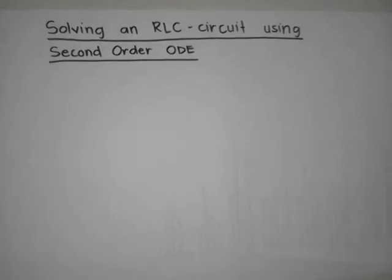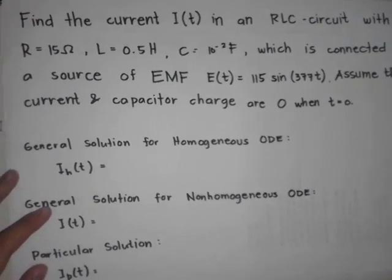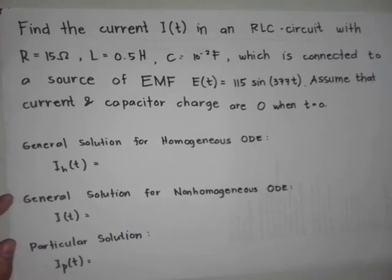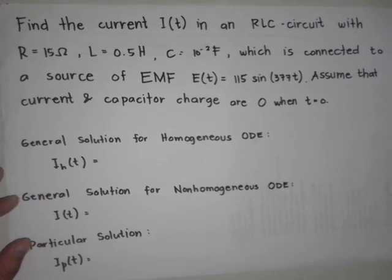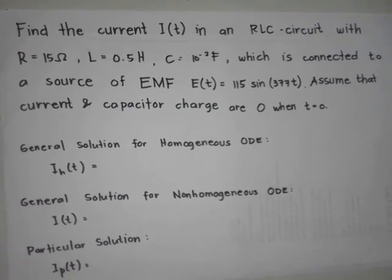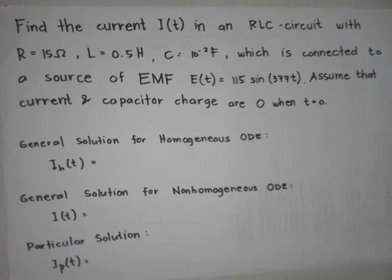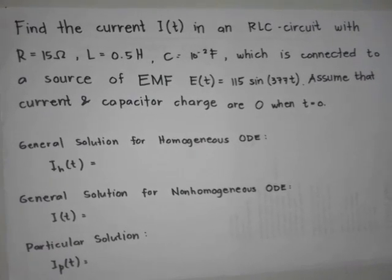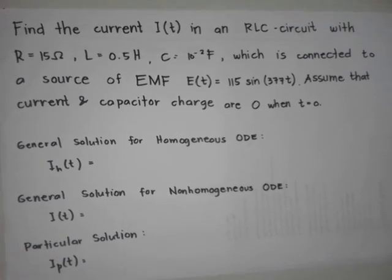We will be solving an RLC circuit using a second-order ODE. Given this problem: find the current I(T) in an RLC circuit with resistance 15 ohms, inductance 0.5 Henry, and capacitance 10 to the negative 2 Farad, which is connected to a source of EMF E(T) = 115 sine 377T. Assume that current and capacitor charge are 0 when T is equal to 0.